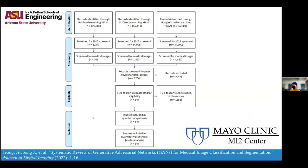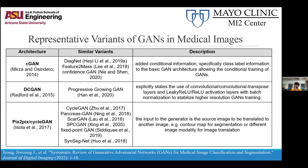This is a GAN review that we did for medical GANs specifically. We screened papers from 2015 to present — giving GAN a little buffer since it started in 2014 — and we focused specifically on classification or segmentation, and in a small way synthesis. From those papers, there are really three quote-unquote big GAN types in medical imaging: conditional GANs, DC GANs, and Pix2Pix/CycleGAN.